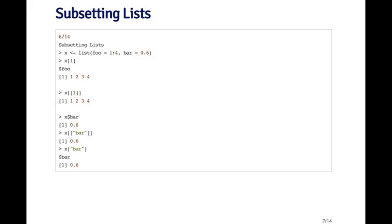I can extract the first element using the single square bracket. Remember, the single square bracket always returns an element that's the same class as the original. So if x is a list, then x bracket one is going to be a list. What I get back is a list that has an element called foo, which is the sequence one through four.